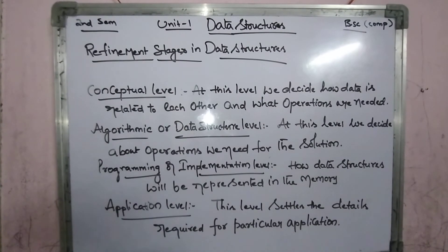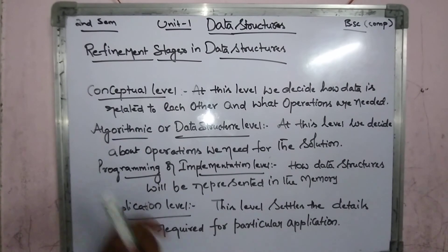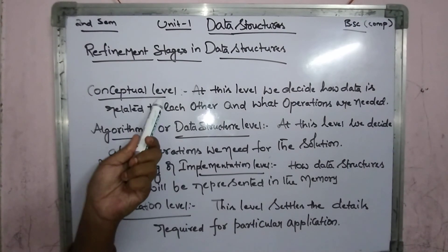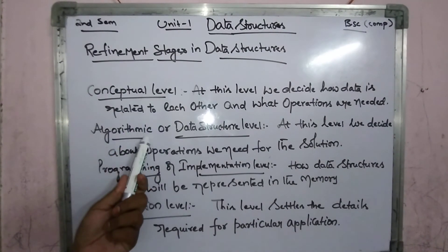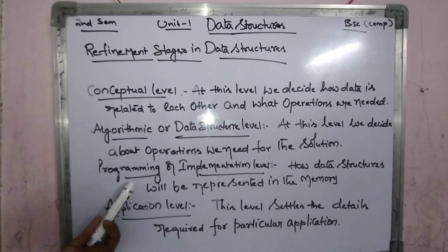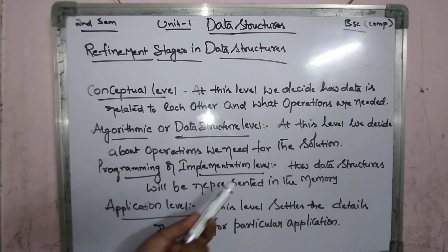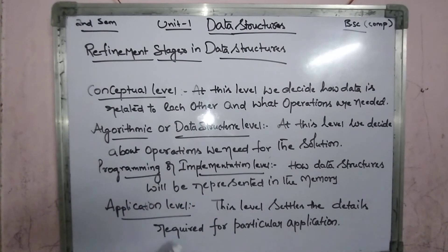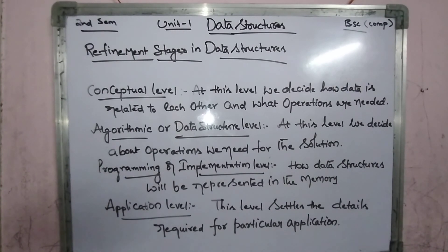These are the four refinement stages in data structures: conceptual level, algorithmic or data structure level, programming or implementation level, and application level.